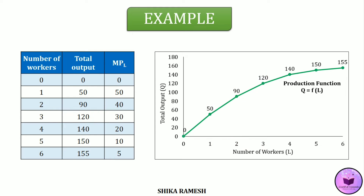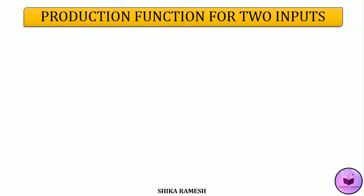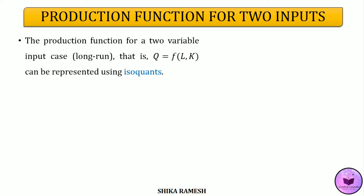This is the case of the short-run production function. What happens if there are two variable inputs — say labour and capital are varying in the long run? If there are two variable inputs, labour and capital, we can represent the production function in the form of an isoquant.